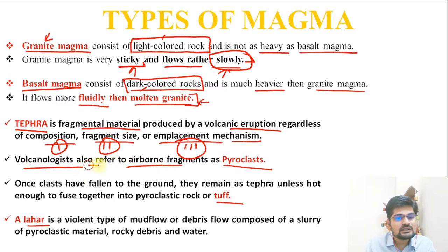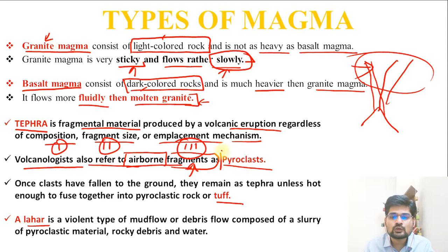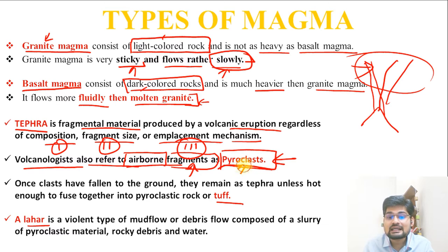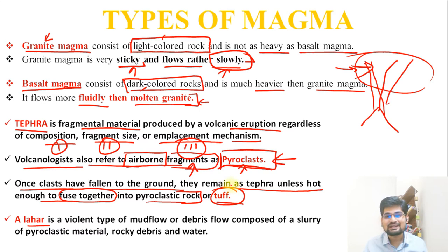Volcanologists refer to airborne fragments from volcanic eruptions as pyroclasts. Once these clasts fall on the ground, they remain as tephra unless hot enough to fuse together into pyroclastic rock, which is called tuff. So tuff is basically the congregation of tephra material that finally forms a rock.